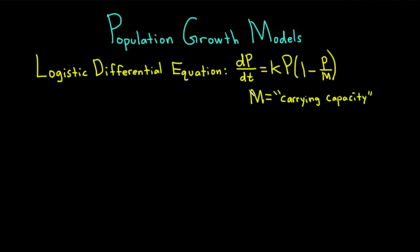This differential equation has a solution, which I've written here in blue. It's P(t) equals M divided by (1 plus A times e to the negative kt), where A equals (M minus P₀) over P₀. P₀, by the way, is the initial population at t equals 0.